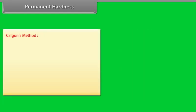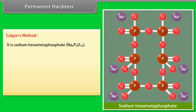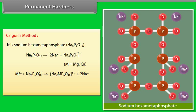Calgan's method: It is sodium hexametaphosphate. The complex anion keeps the Mg2+ and Ca2+ ions in solution.